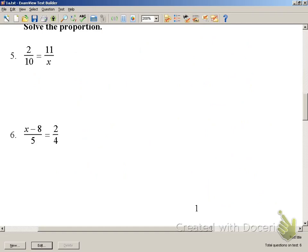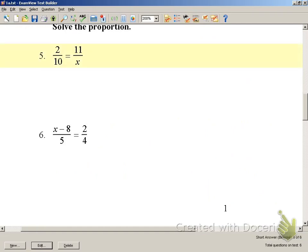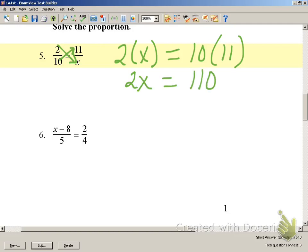We're going to say 2 times X is equal to 10 times 11. So we have 2X equals 110.